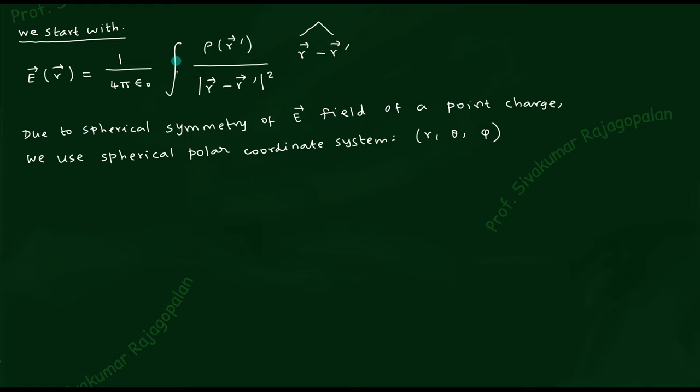Since the divergence of r-hat/r² is zero, and using the script-r notation the divergence of script-r / r² is also zero — because differentiation of (r − r′) or r with respect to r gives the same result — the left-hand side of the Gauss divergence theorem equals zero. Now we need to evaluate the right-hand side.